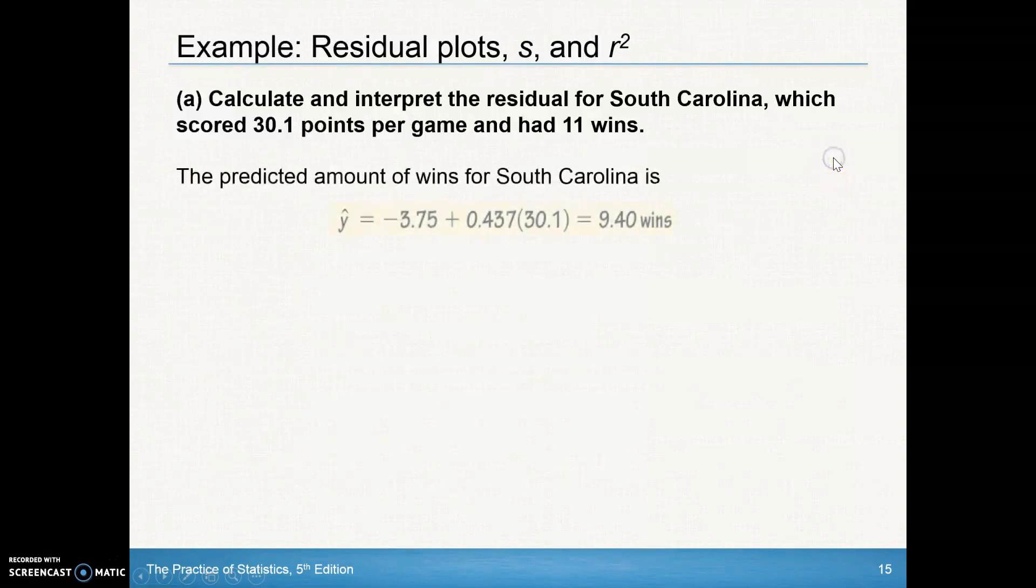The predicted amount of wins for South Carolina, by putting that number into the regression equation, taking that 30.1, they scored 30.1 points per game. Put it in the formula. And the formula predicts they should have 9.40 wins.